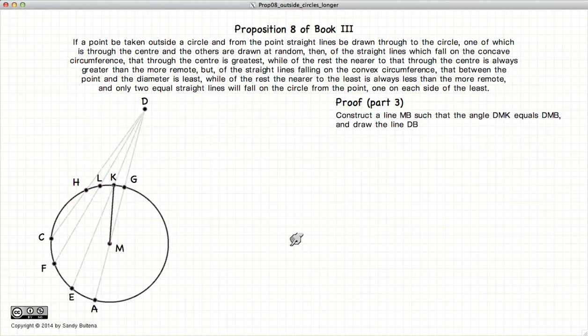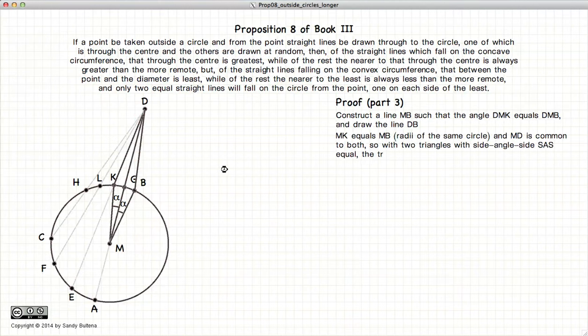Now going on to the third part of the proof, we are going to construct another line from M to the edge of the circle, such that this angle is the same. So KMG angle will be the same. And connect the dots. Now KM is equal to MB, again because they are the radii of the same circle. We have one line that is common to these two triangles, MD. So these two triangles are equal. And if they're equal, then these sides are all equal. So in other words, DK is equal to DB.